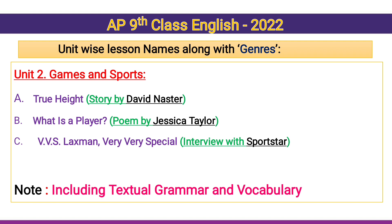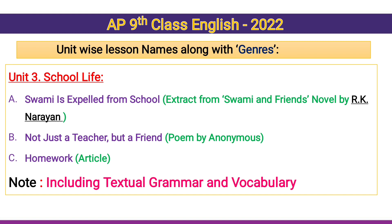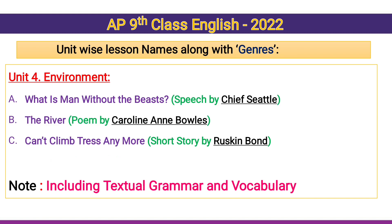Unit 3: School Life. Reading A — 'Swami is Expelled from School,' an extract from the novel 'Swami and His Friends' written by R.K. Narayan. Reading B — 'Not Just a Teacher but a Friend,' a poem by an anonymous writer. Reading C — 'Homework,' an article. Including textual grammar and vocabulary.